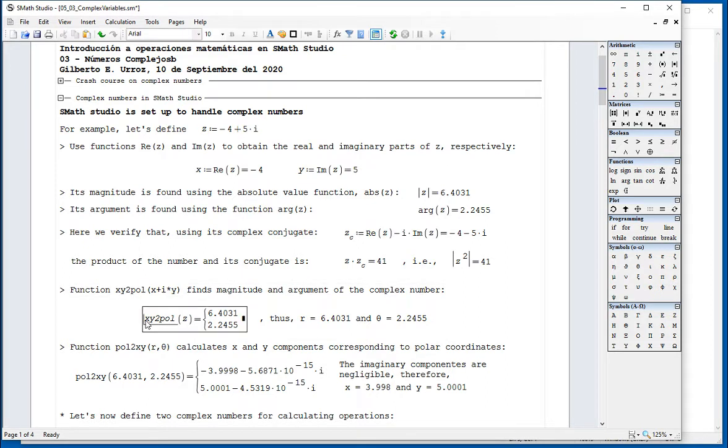Here, in xy2pole, you have to give a complex number, and it will give you the radial coordinate and the angular coordinate.